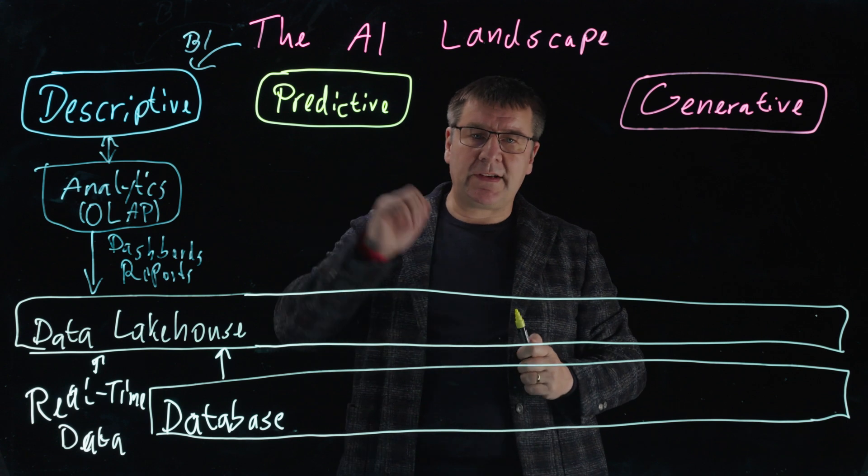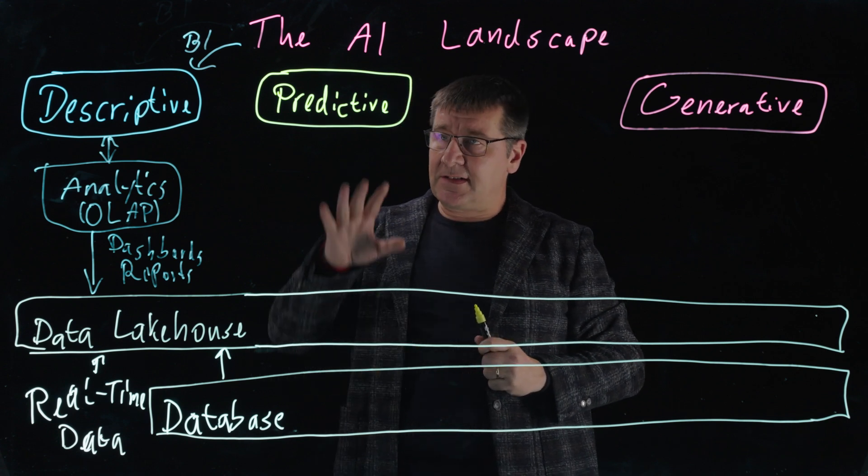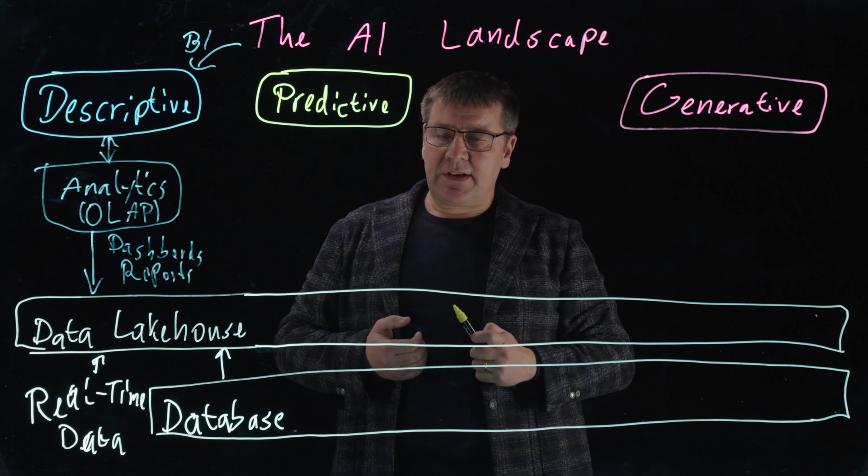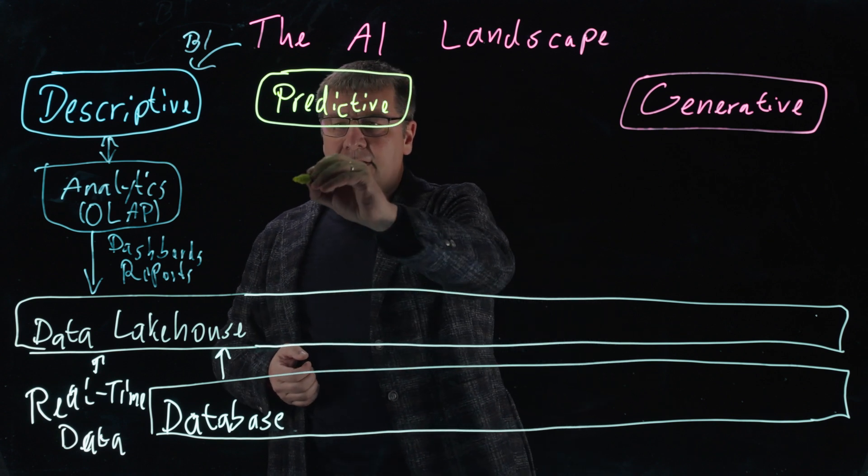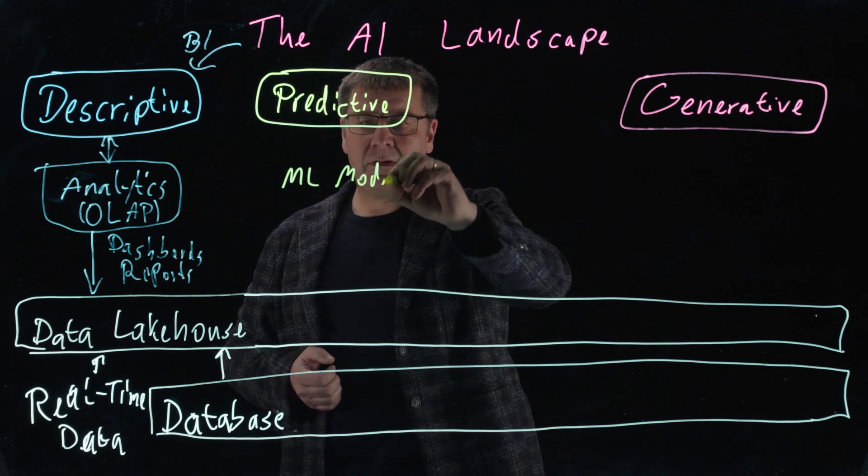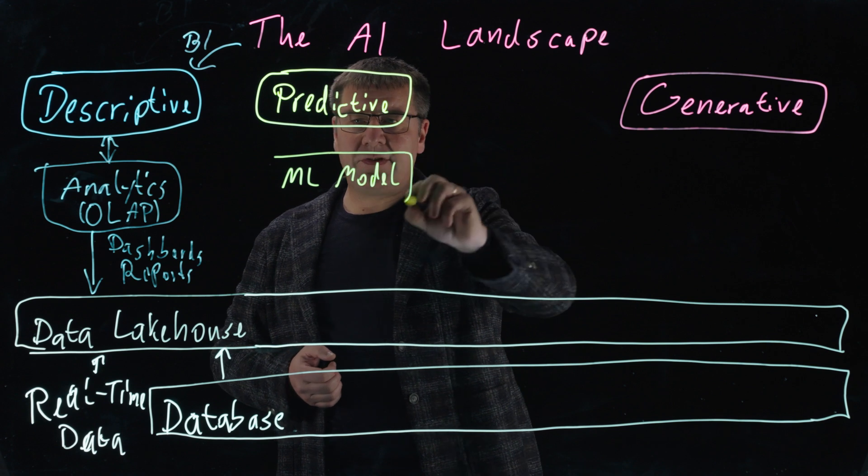The next level is predictive AI. Predictive AI, as the name indicates, is about making predictions. And you're making these predictions based on the mechanism that is called a model, like a machine learning or ML model. So now the question is, how do you get to this?